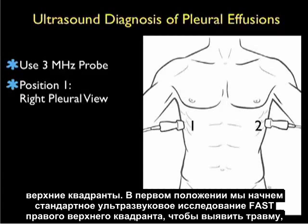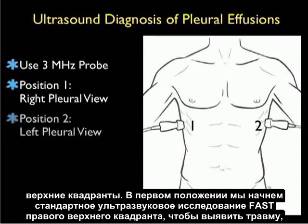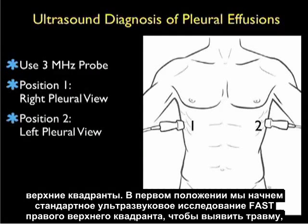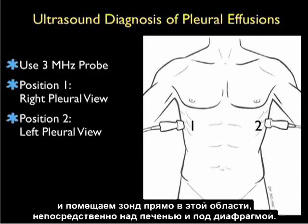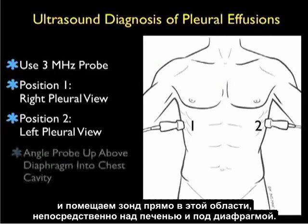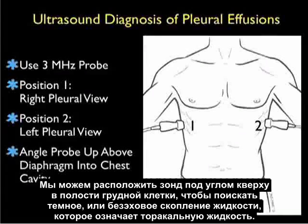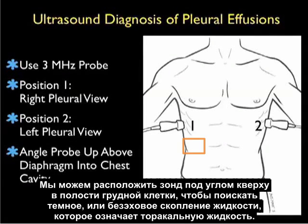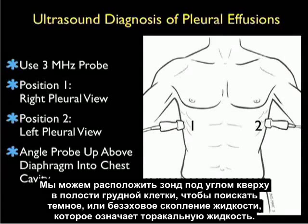In position 1, we'll be coming into the standard right upper quadrant trauma fast exam and position the probe into that area just above the liver and below the diaphragm. We can then angle the probe upwards into the thoracic cavity to look for a dark or anechoic fluid collection signifying thoracic fluid.